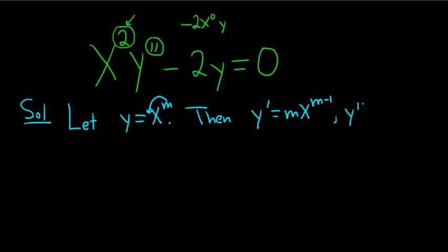Then you take the derivative again. So y double prime. You put the m minus 1 in the front. So m minus 1, m, x to the m minus 2.